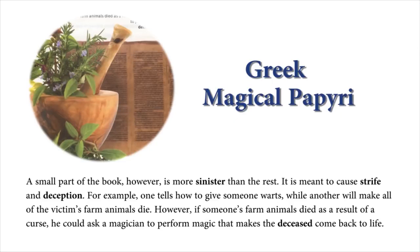A small part of the book, however, is more sinister than the rest. It is meant to cause strife and deception. For example, one tells how to give someone warts, while another will make all of the victim's farm animals die. However, if someone's farm animals died as a result of a curse, he could ask a magician to perform magic that makes the deceased come back to life.